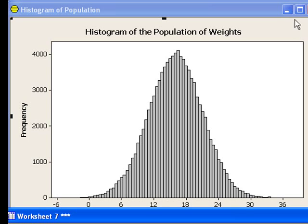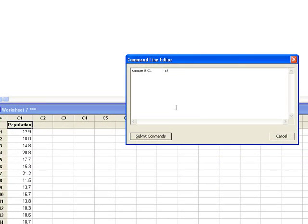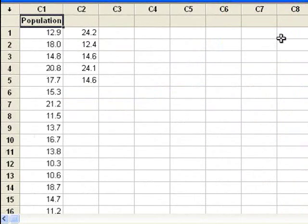Okay, now I will take a sample from this population, exactly as I did in the last video. Here we will take samples of size 5. This is one sample of size 5. These are five randomly selected values from the population of weights.